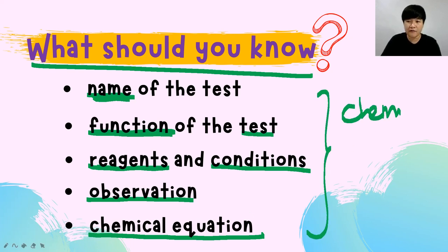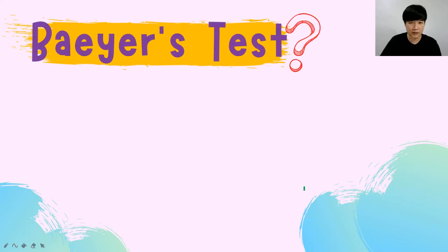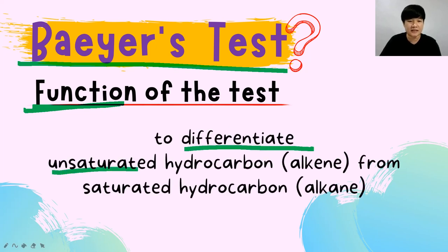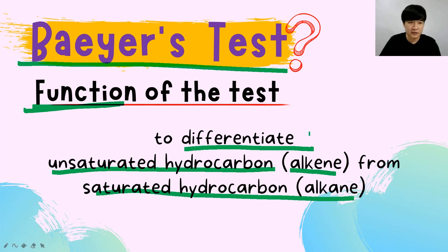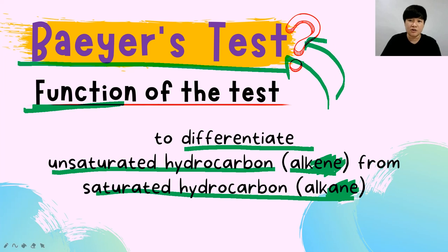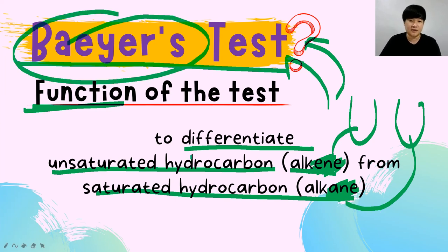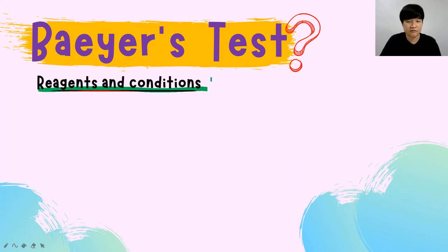Let's start with the Bayer test. The function of the Bayer test is to differentiate the unsaturated hydrocarbon alkene from the saturated hydrocarbon alkane — the main purpose is to differentiate carbon-carbon double bond from carbon-carbon single bond. You would choose the Bayer test when you have two test tubes, one with alkene and one with alkane.